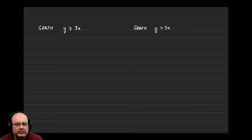Welcome back. In this example, we'll graph these two inequalities from scratch. So let's start with y is greater than or equal to 3x, and then we're actually going to steal most of the work we do there to graph the one on the right side, which is y is greater than 3x.